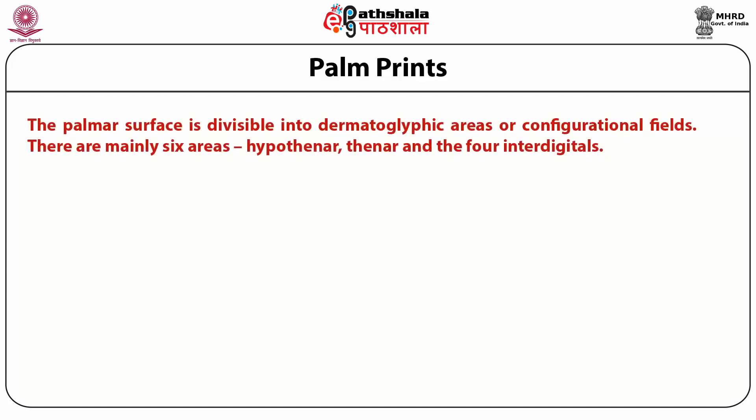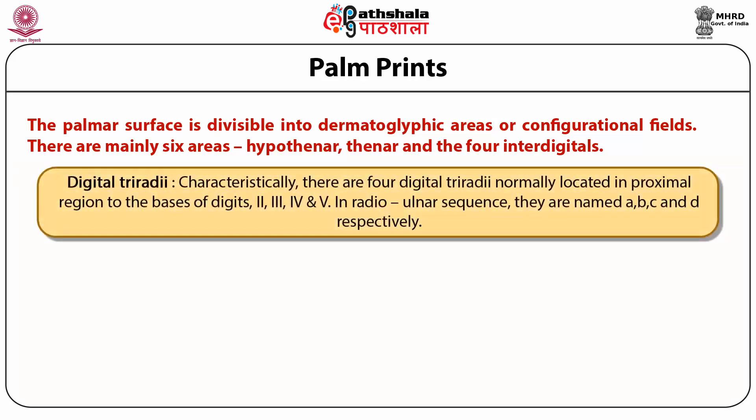Palm Prints. Palm prints are studied as follows. First, configuration areas: the palm surface is divisible into dermatoglyphic areas or configuration fields. There are mainly six areas: first is hypothenar, then thenar, and the four interdigital areas. Each of these areas is a topological unit, its individuality being expressed both by the existence in some palms of discrete patterns and by the characteristic presence of partial boundaries formed by tri-radii and their radians.